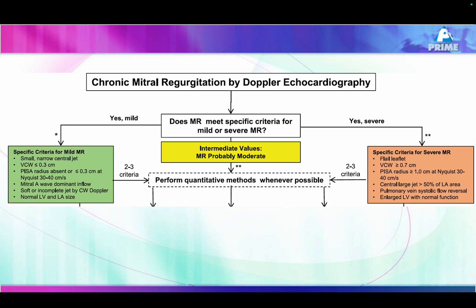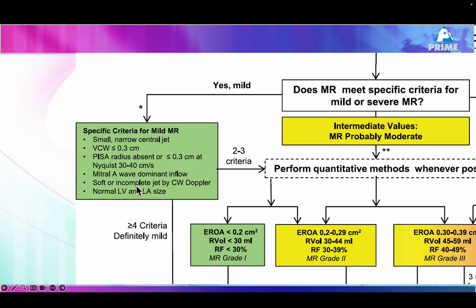Now let me summarize what to do in day-to-day clinical practice using the recent guidelines. We take criteria for mild MR and criteria for severe MR. If four out of the mild criteria are present, it is mild. If four out of the severe criteria are present, it is severe. The mild criteria include: small jet, vena contracta less than 3 mm, PISA radius less than 3 mm at a Nyquist limit of about 40 cm/s, A-dominant LV inflow as in our case, and CW Doppler inflow intensity greater than the TR jet intensity.